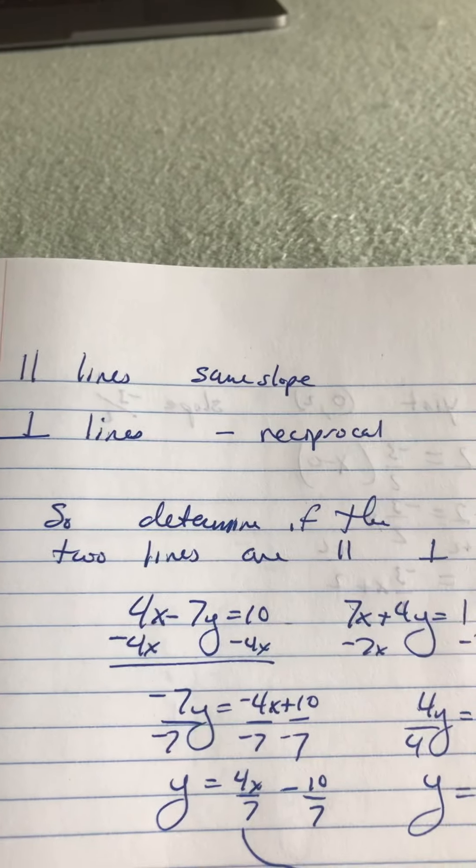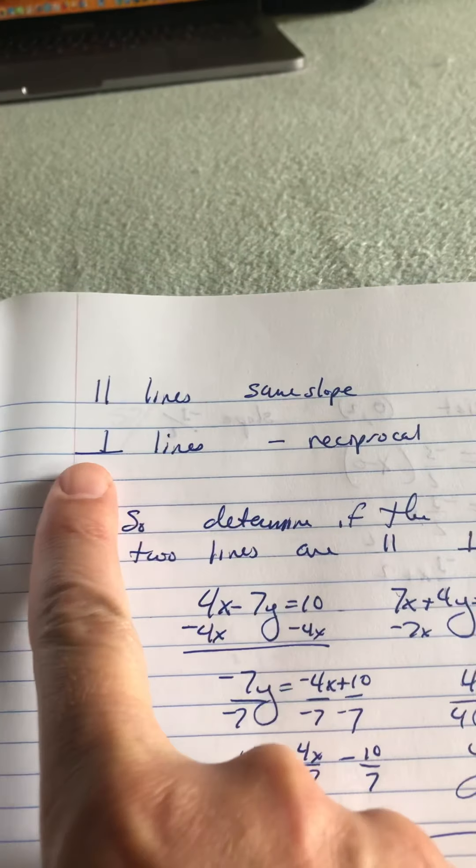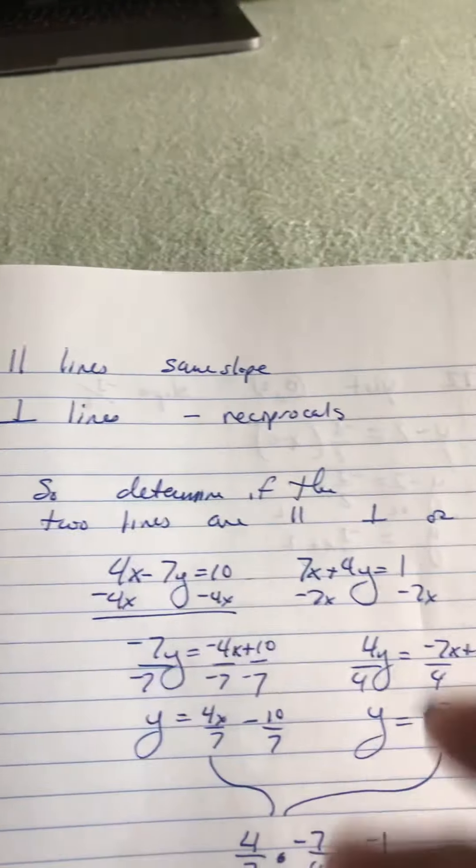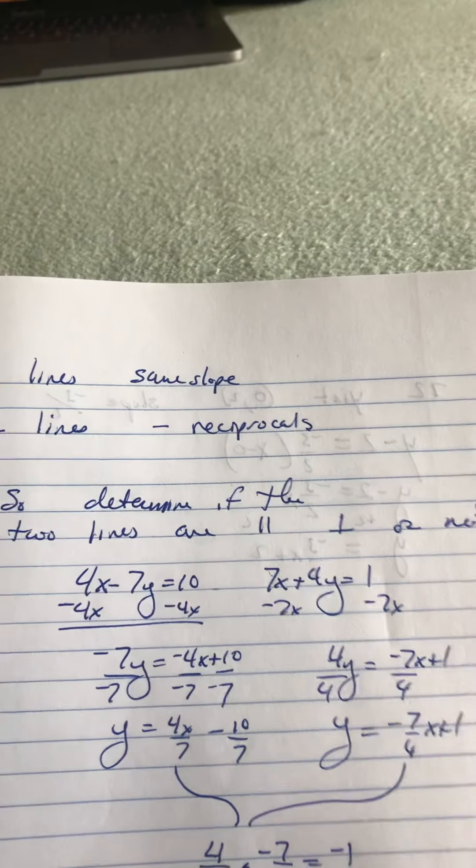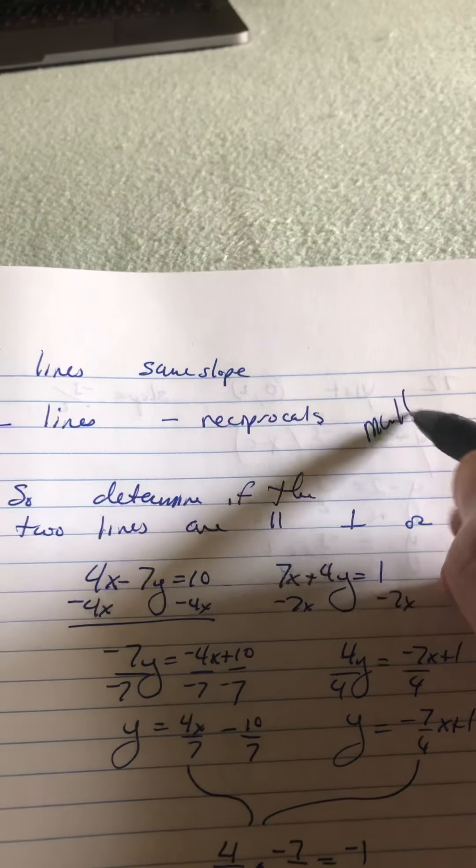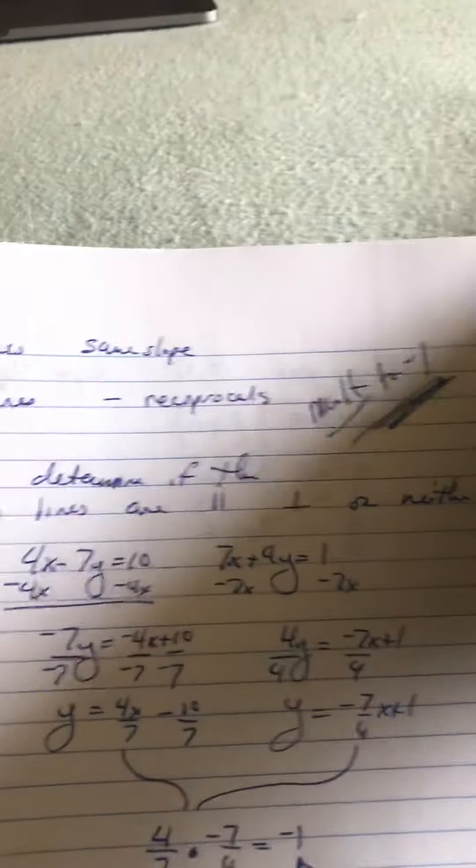All right. Parallel lines have the same slope. Perpendicular lines, and this symbol is the symbol for perpendicular, have slopes that are negative reciprocals. And if you multiply them together, if you multiply the two slopes together, they should multiply to negative 1. So, real quick here, they multiply to negative 1. Keep that in mind.